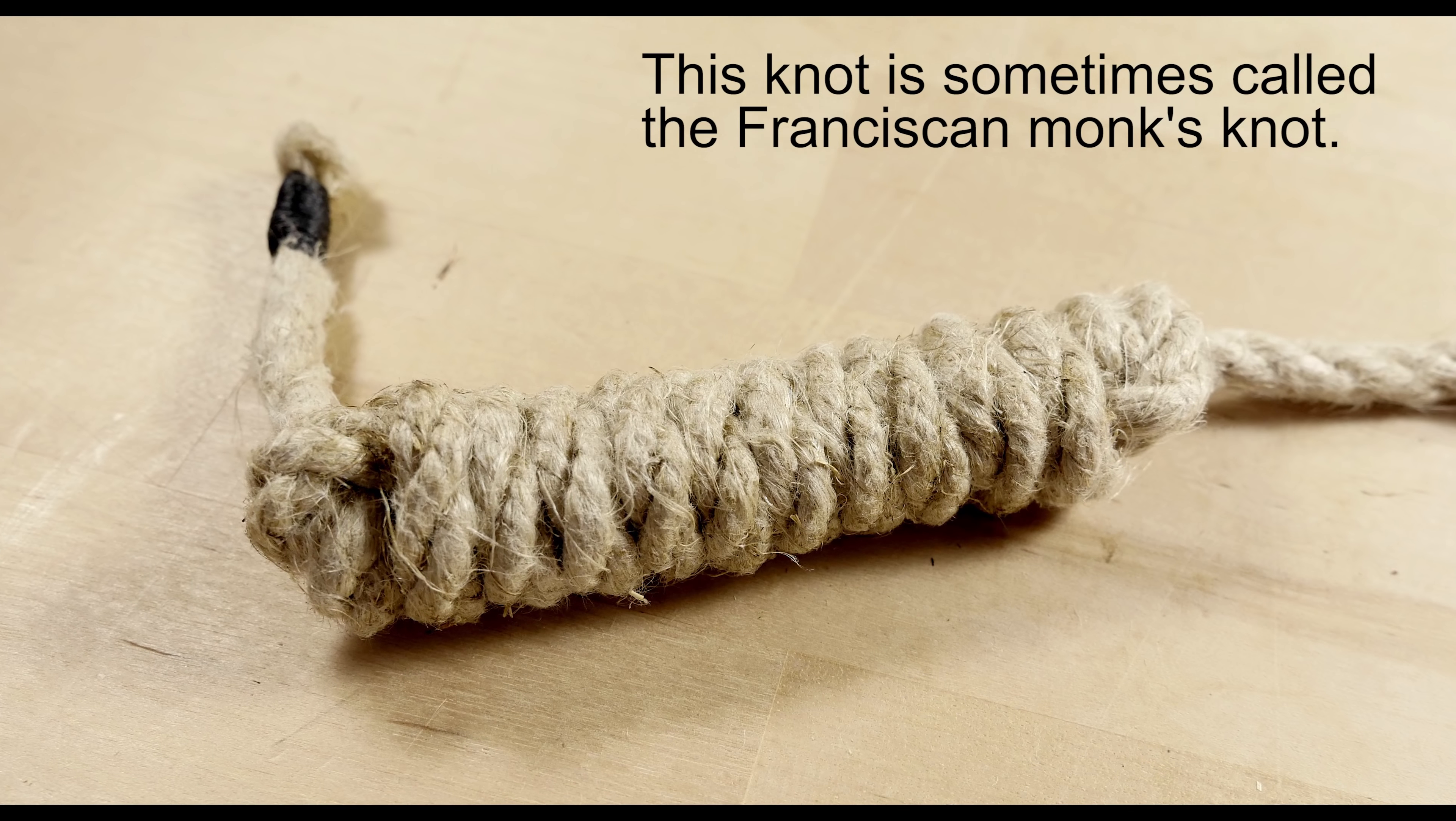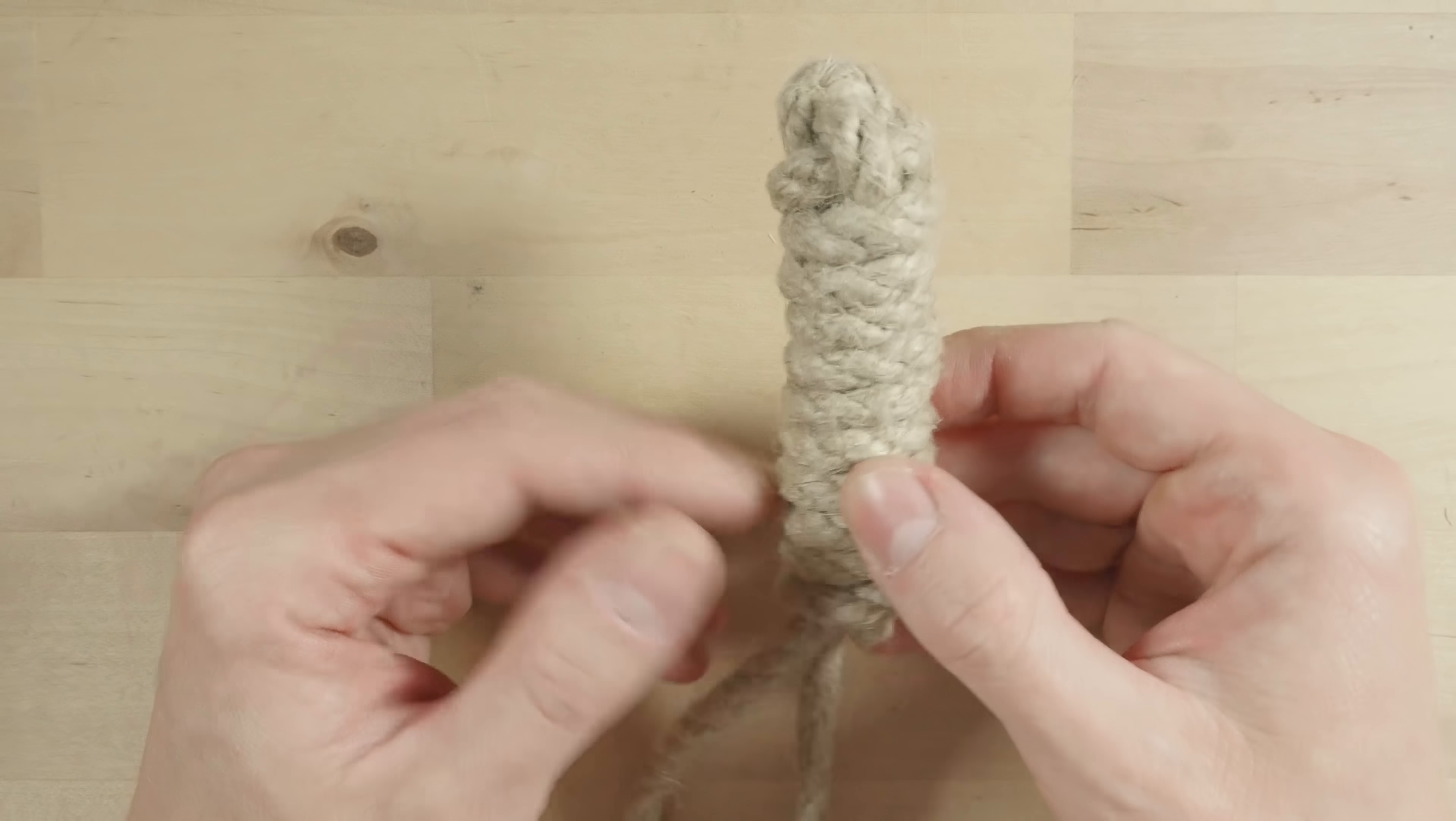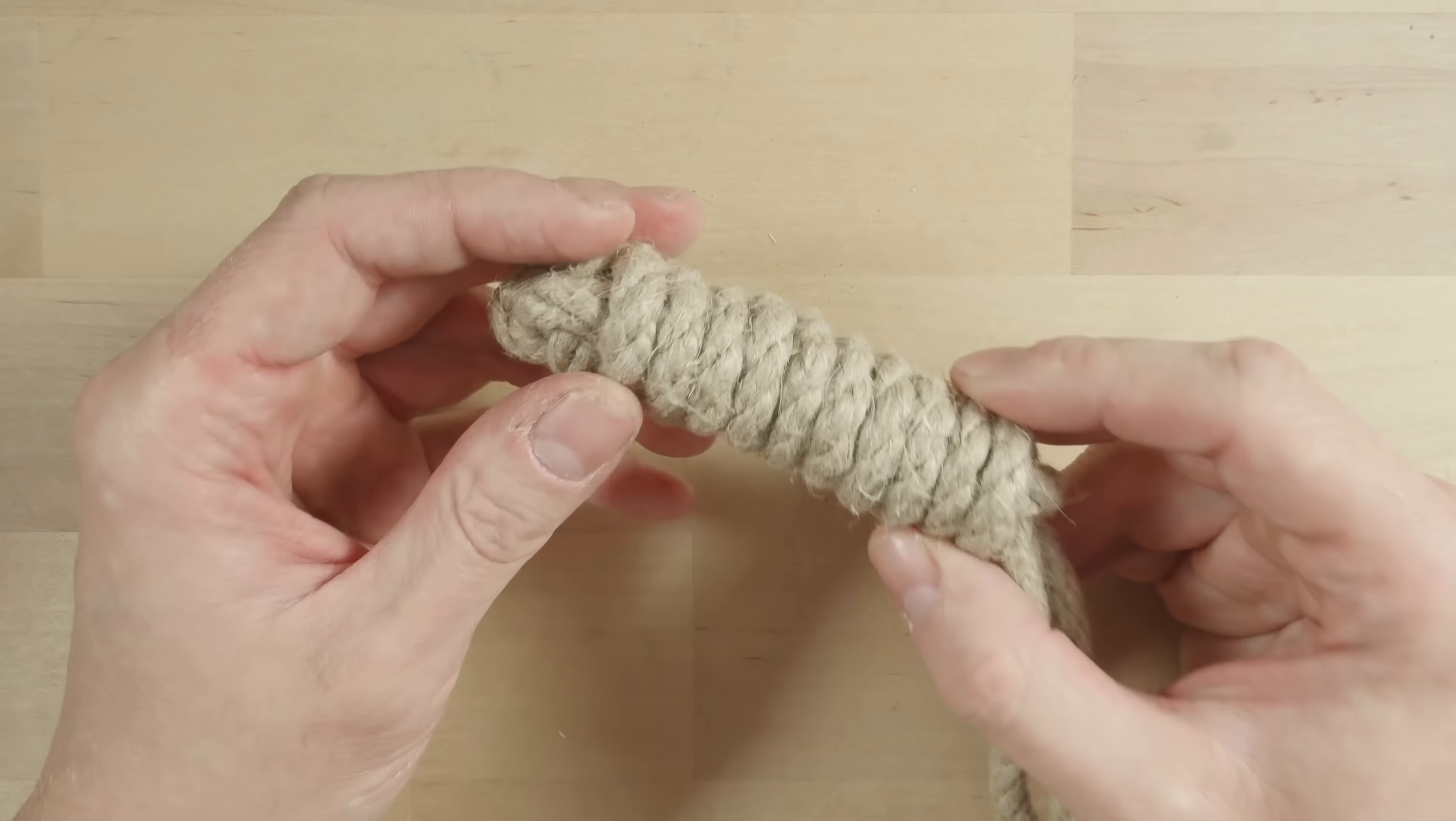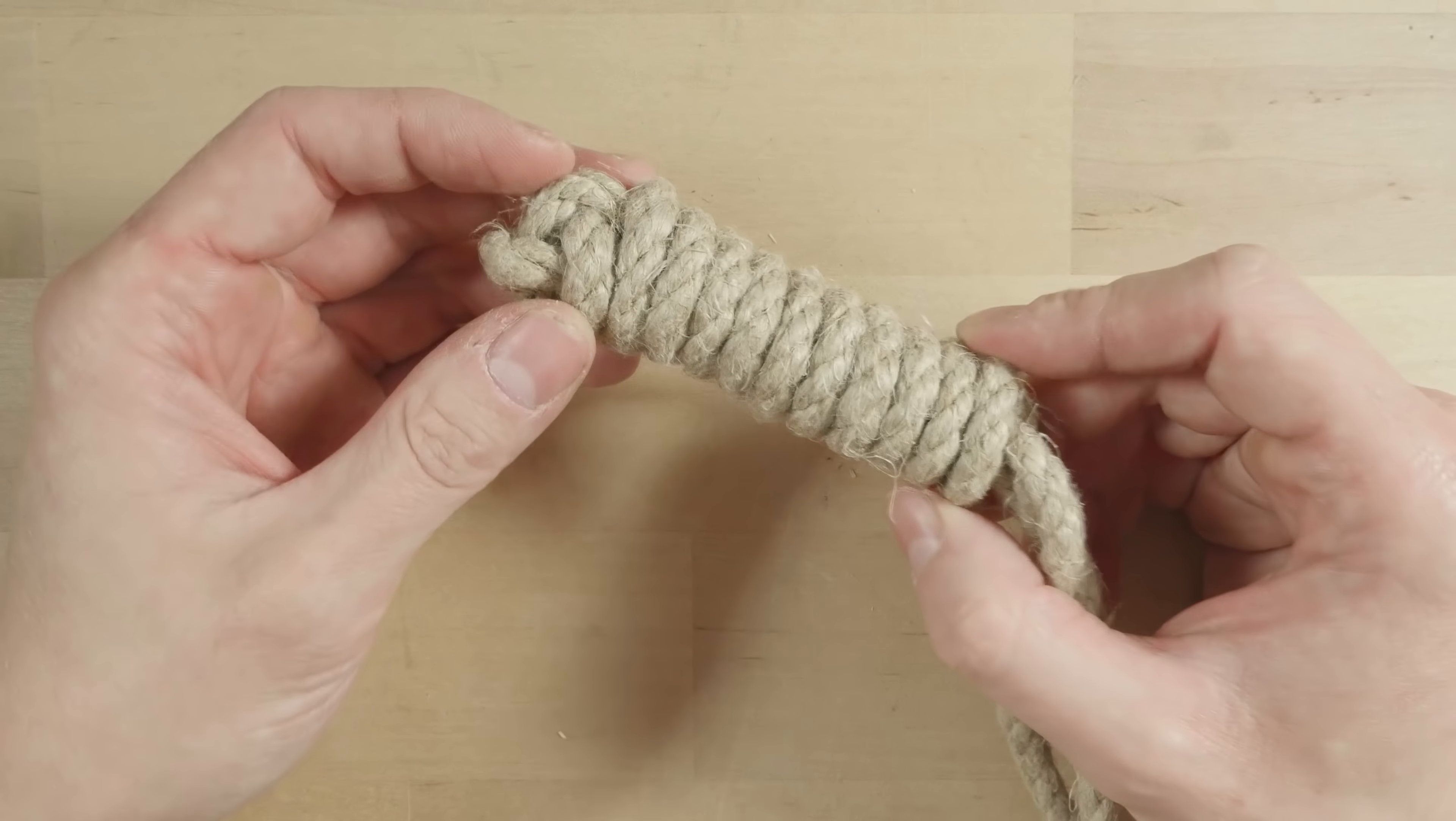Here is an example of a heaving line knot. The primary use for this knot is to bulk up and make the end of your rope heavier. This way, passing rope is made easier. So you can throw the end of your rope overboard, perhaps over a tree branch if you're hanging a swing or something like that.